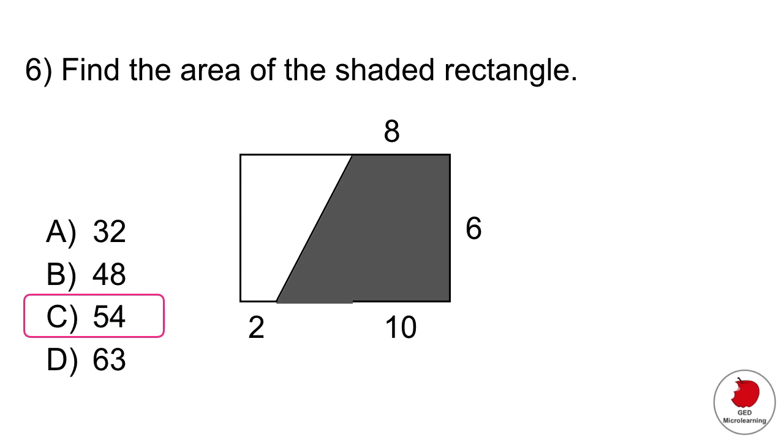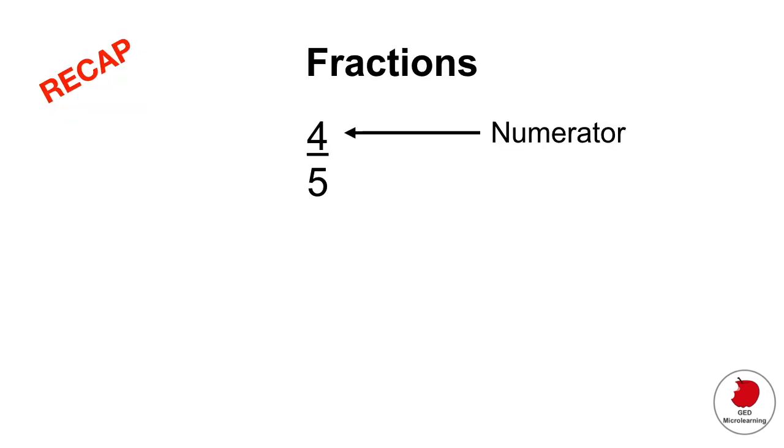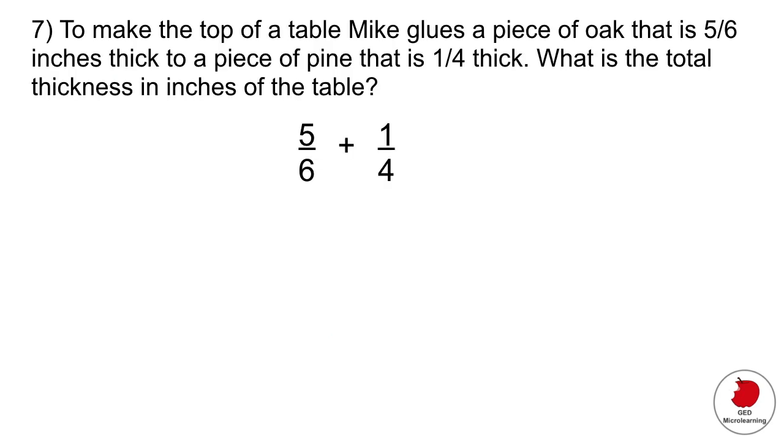To make the top of a table, Mike glues a piece of oak that is 5 and 5/6 of an inch to a piece of pine that is 1/4 thick. What is the total thickness in inches of the table? You can see that as the answer options they give you a ton of fractions and mixed numbers. Remember that when you add or subtract a fraction, the denominator always has to be the same. You have to find what is known as a common denominator.